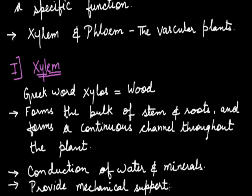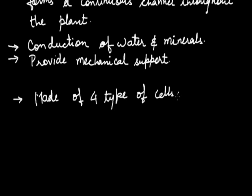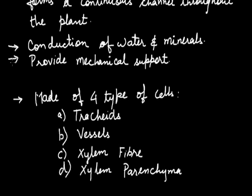Now this xylem tissue is further composed of four different type of cells which includes tracheids, xylem vessels, xylem fiber and lastly xylem parenchyma. Out of these four types of cells the first three that is tracheids, vessels and the xylem fiber, these are basically dead cells. Only the xylem parenchyma is made up of living cells.